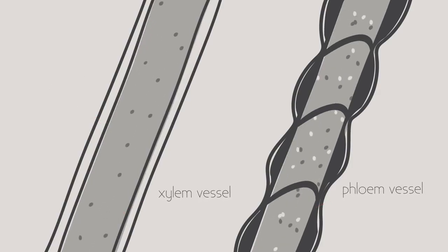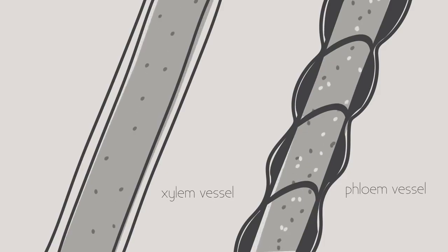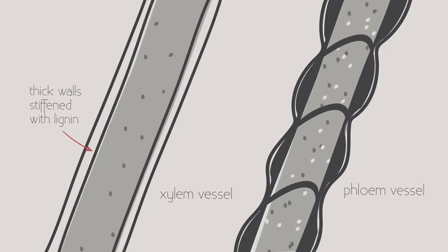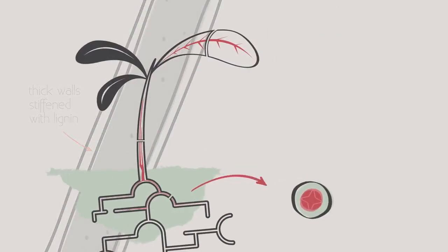The xylem vessels are made of elongated dead cells that are impermeable to water and have walls containing lignin, a woody material. Because of this xylem vessels are tough which is why the vascular bundles in the roots are in the center. They help prevent the plant being pulled out of the ground. They are also more protected in the center.